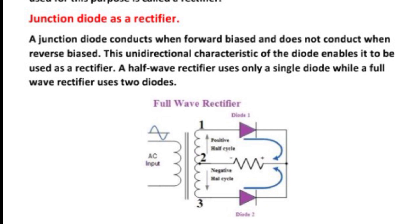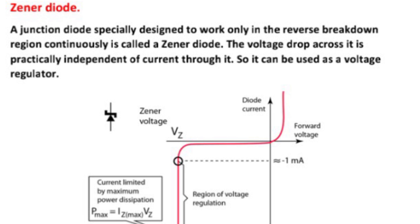Now the Zener diode. What is the Zener diode? A junction diode specially designed to work only in the reverse breakdown region continuously is called a Zener diode. The voltage drop across it is practically independent of the current, so it can be used as a voltage regulator.